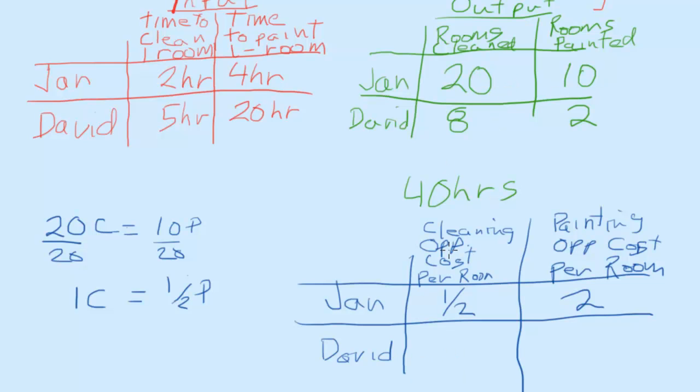Down here with David. David has eight rooms he could clean. Or he could do two rooms if he painted. So let's divide both by eight. And so for cleaning, we give up a fourth of a room that could be painted. So I'm going to put one fourth right here. Or if we did it for painting, this is going to be four, which is eight divided by two.